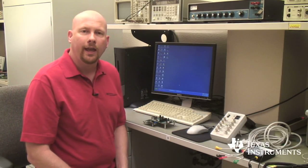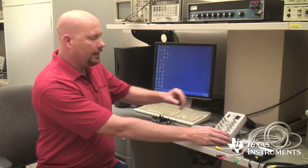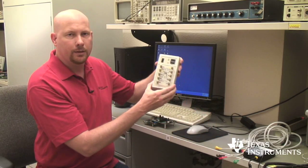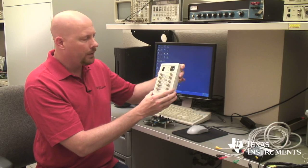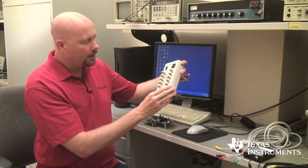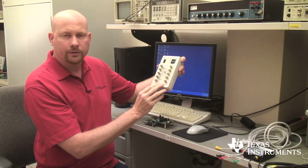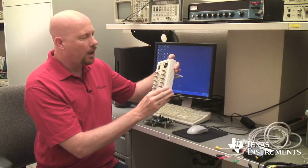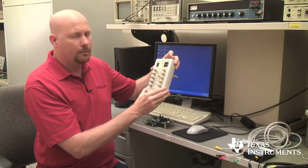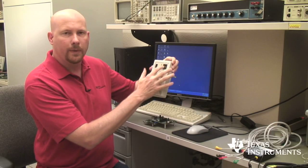Now to evaluate the ADS1298 with ECG type signals you'll need an ECG signal simulator such as this one. This is a fairly inexpensive model. It has all of the common ECG connections in snap connectors that are all very clearly labeled and you can adjust the heart rate and simulate different kinds of cardiac conditions using these buttons at the top.